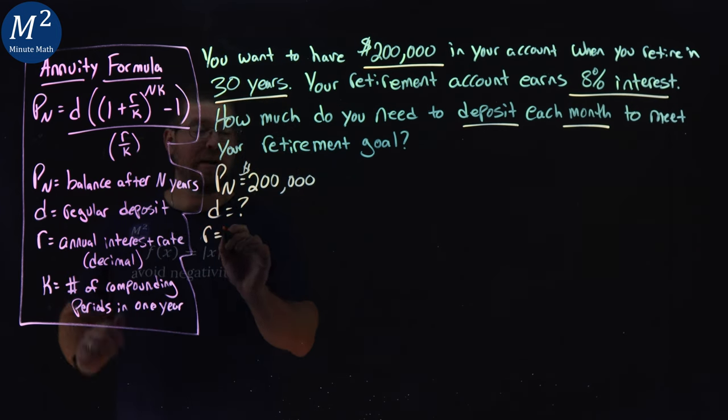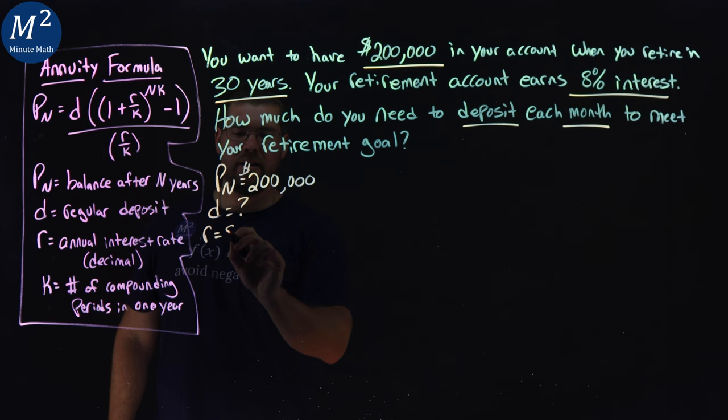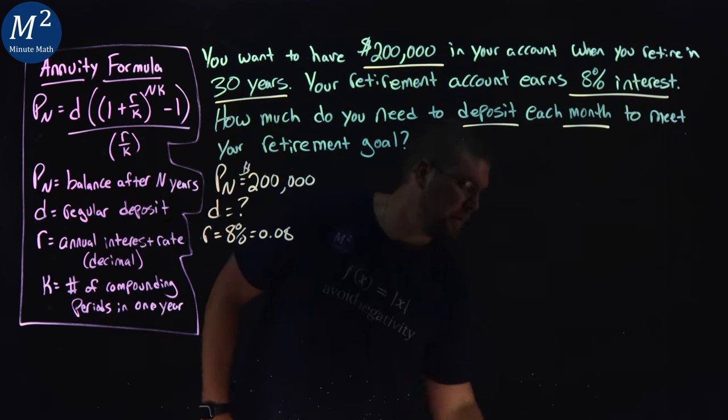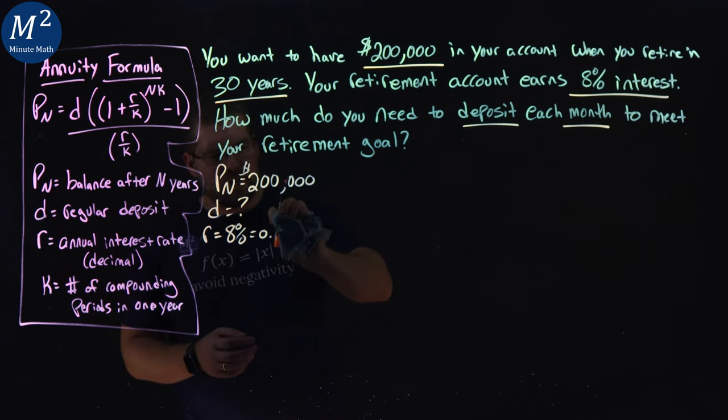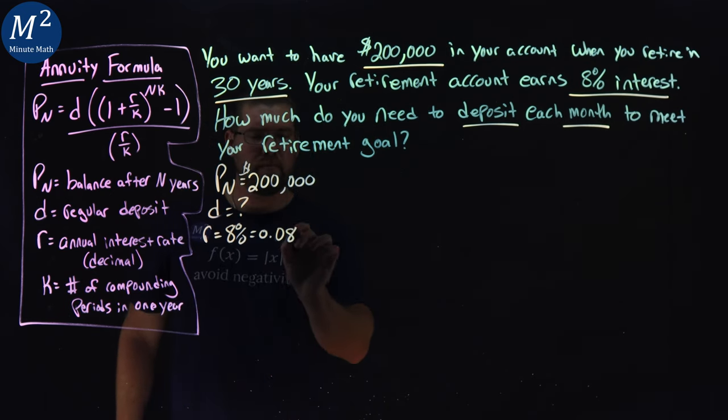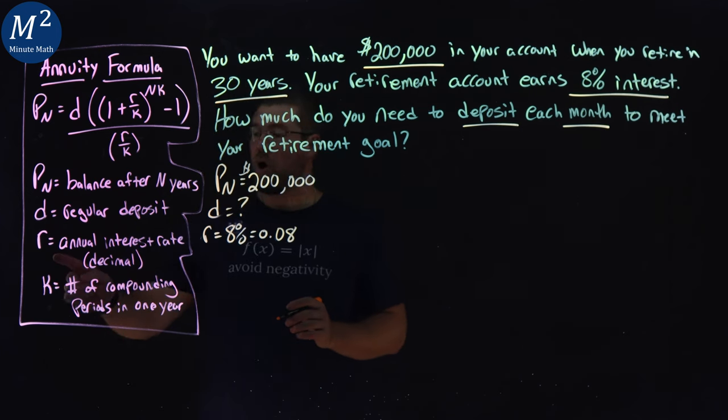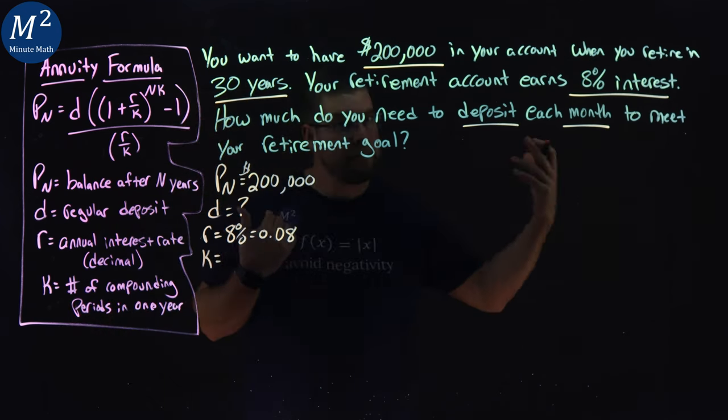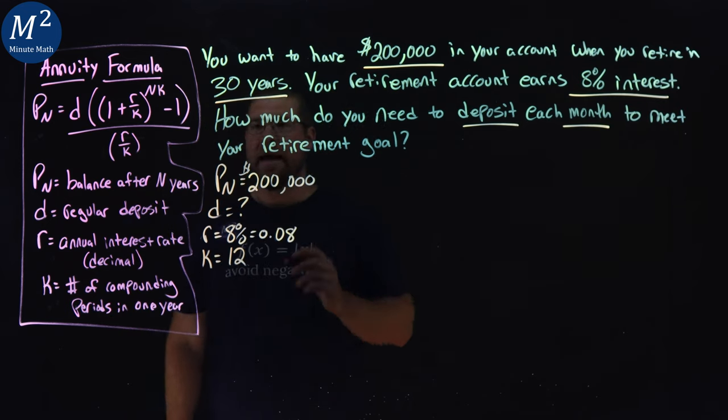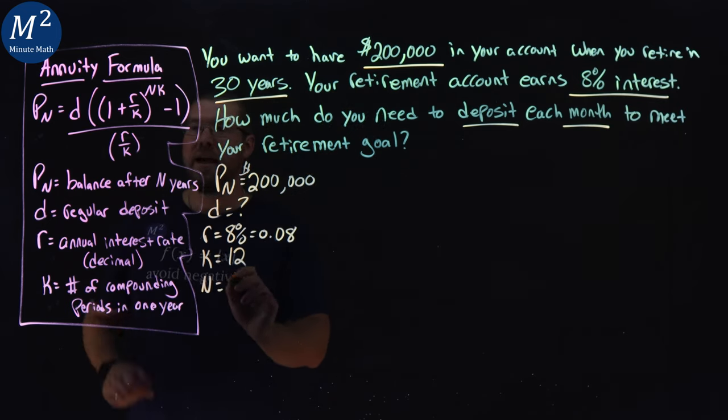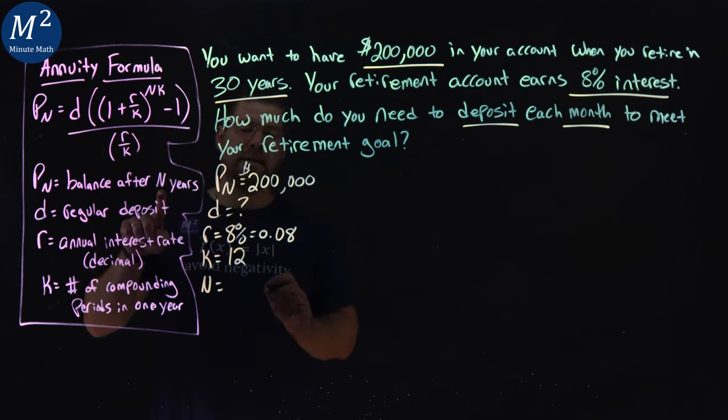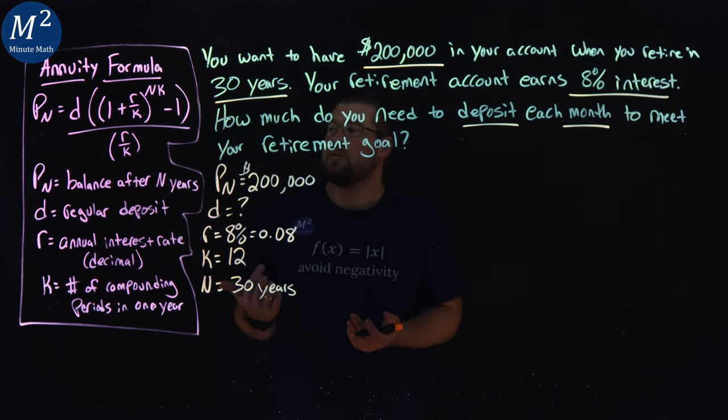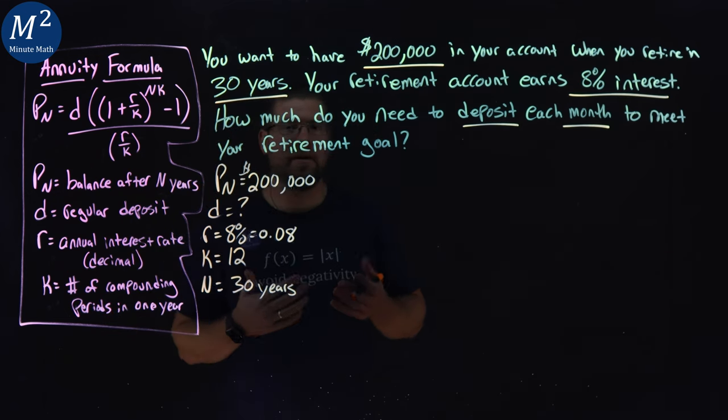Our R value, our interest rate, 8% as a decimal is 0.08. Our K, the number of compounding periods, we're depositing it monthly, 12 months in a year. And the number of years, our N value, N years here is our 30 years. And so what we're going to do is write this in our annuity formula, and then we're going to solve for D.